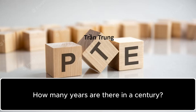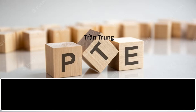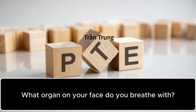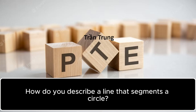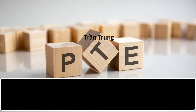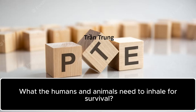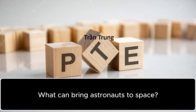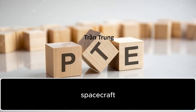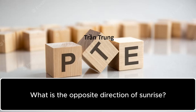How many years are there in a century? 100. What organ on your face do you breathe with? Nose. How do you describe a line that segments a circle? Chord. What do humans and animals need to inhale for survival? Oxygen. What can bring astronauts to space? Spacecraft. What is the opposite direction of sunrise? West.